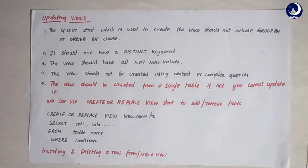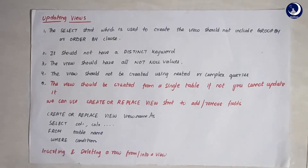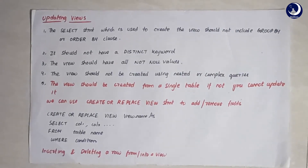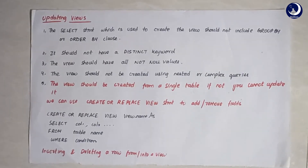All other operations can be performed on a view similarly to how you perform them on a table — you can display it, insert into it, and delete from it. However, updating a view is a bit different because you are actually selecting data from some other table. You have to satisfy certain conditions; if you don't satisfy even one, you won't be able to update the data. The first condition is that the SELECT statement used to create the view should not include a GROUP BY or ORDER BY clause.